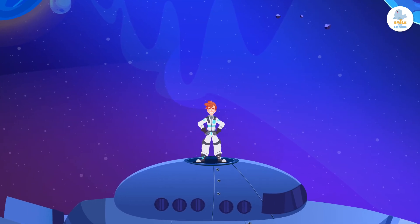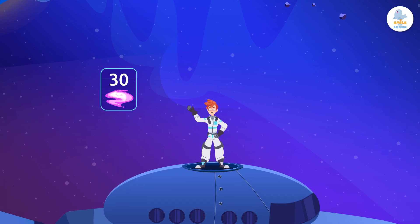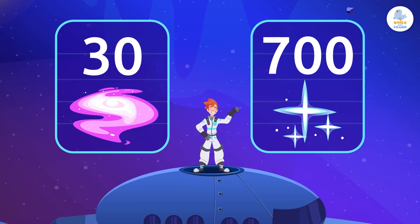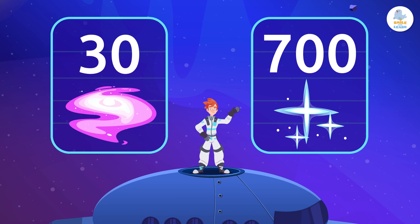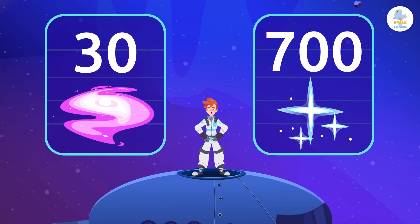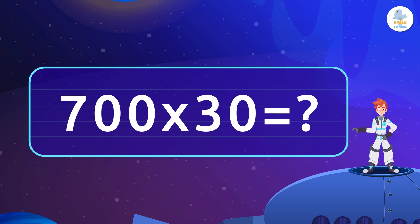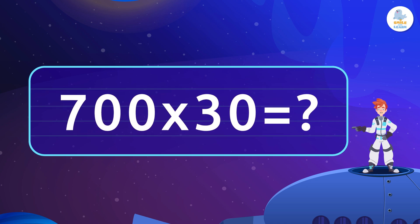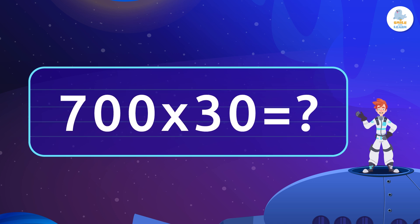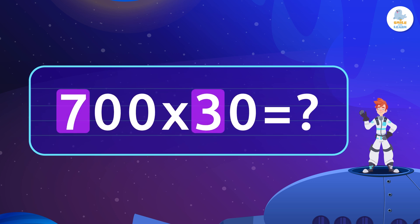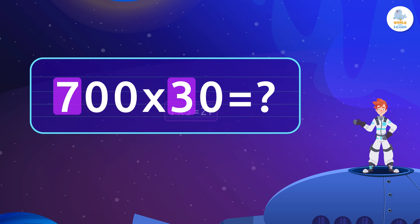Suppose we want to know how many stars there are in 30 galaxies with 700 stars in each one. We will calculate the answer to this multiplication problem with our simple trick, exactly as before. Let's start by multiplying the non-zero numbers — in this case, 7 times 3. What result does it give us?